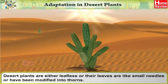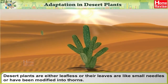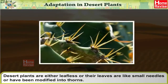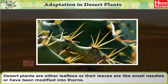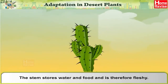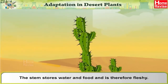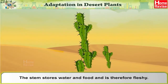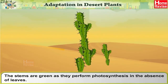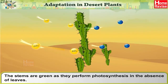Desert plants are either leafless or their leaves are like small needles or have been modified into thorns. As a result, they lose very little water by evaporation. The stem stores water and food and is therefore fleshy. The stems are green as they perform photosynthesis in the absence of leaves.